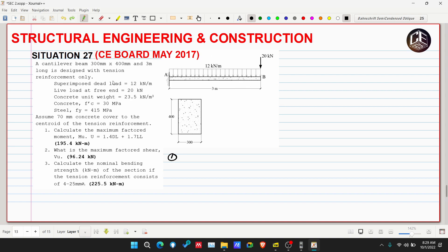This means we need to solve the overall dead load first before we can solve the maximum factored moment. So WDL is equivalent to the 12 kN per meter, then we add the own weight.